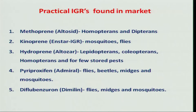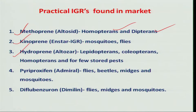There are many insect growth regulators available in the market. Among them, methoprene was the first to be released, which is very effective against homopterans and dipterans, followed by quinoprene, hydroprene, pyriproxyfen, and diflubenzuron. These are available in other countries, but only diflubenzuron is available in India for management of various insect pests.